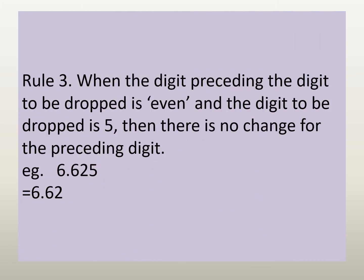Rule number 3: when the digit preceding the digit to be dropped is even and the digit to be dropped is 5, then there is no change for the preceding digit. Taking the example 6.625, 5 is to be dropped and the preceding digit is 2, which is even. So when rounded, the number becomes 6.62. The 5 is dropped and there is no change for 2.